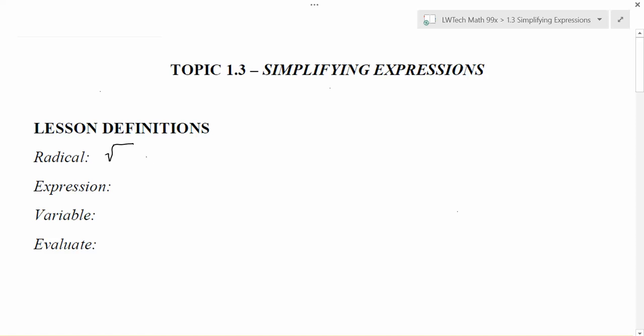The reason that we use the term radical is it's a little bit more general. So for example, this is a square root. This is a cubed root where we have a small three in front of it. We can also have fourth roots.